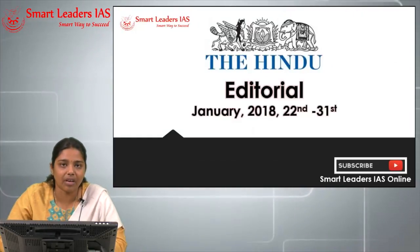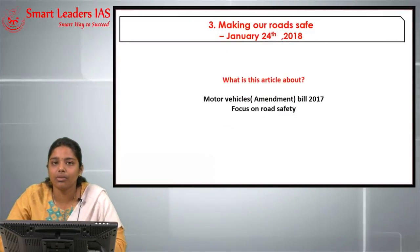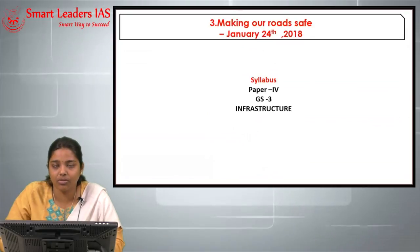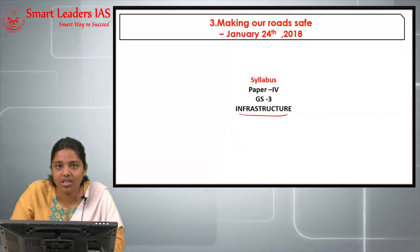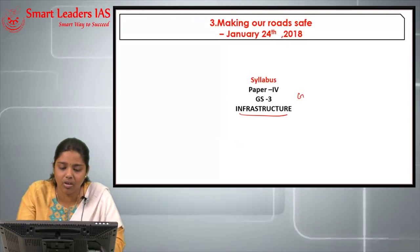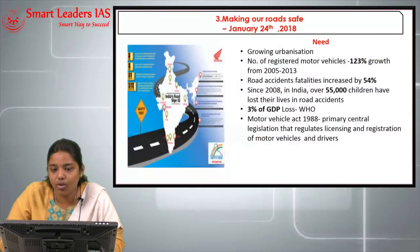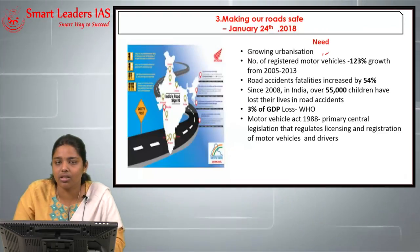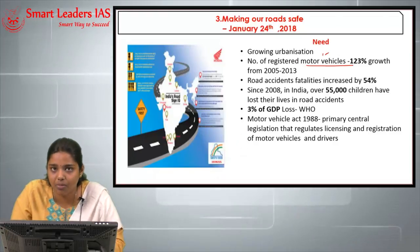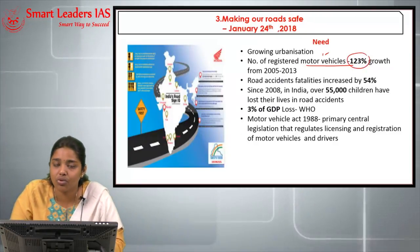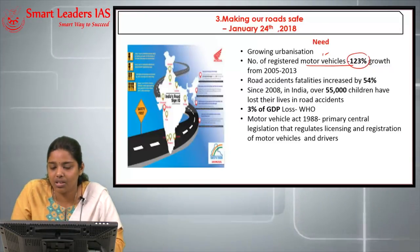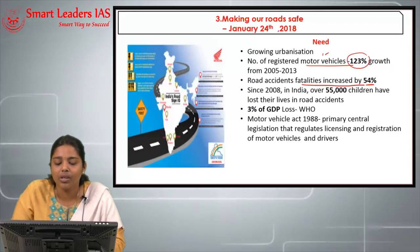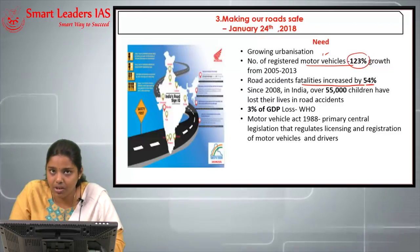The next topic is about road safety, which came on 24th January — how the Motor Vehicle Amendment Bill 2017 is linked to road safety. Infrastructure is from GS3 and urbanization from GS1. The need for road safety arises from growing urbanization, which has multiplied the number of vehicles — registered motor vehicles grew 123% from 2005 to 2013. This resulted in more accidents; fatalities increased by 54% in the same period. Since 2008, children who lost their lives on roads numbered 55,000. WHO says 3% of GDP is lost due to inadequate road safety.